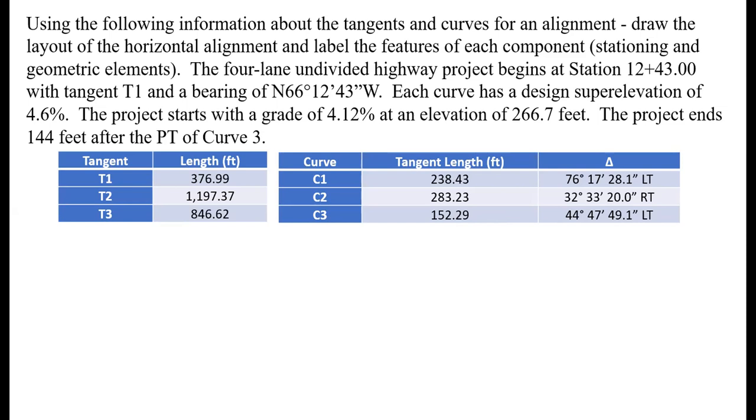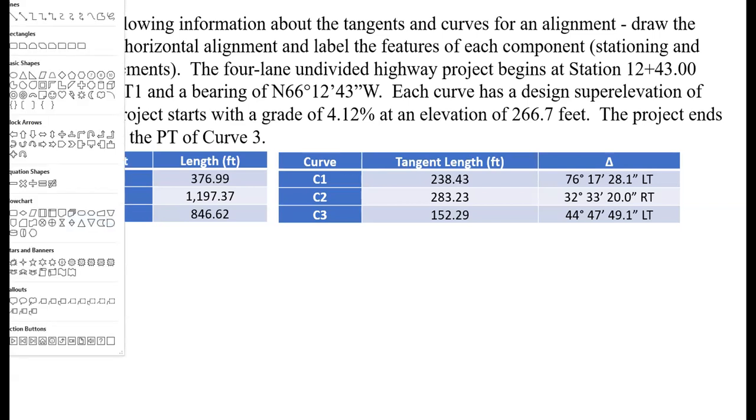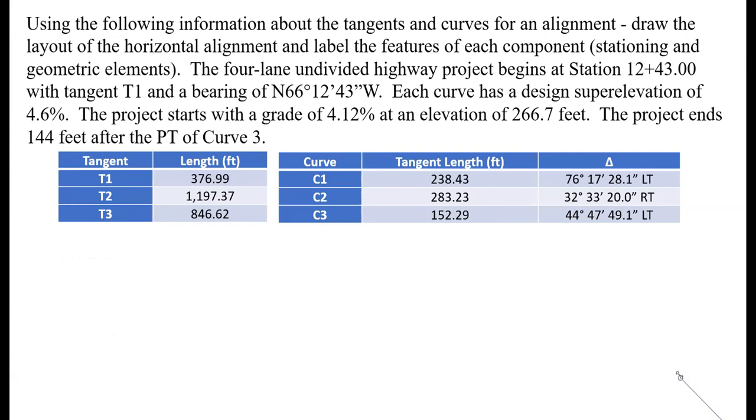There's probably some extra information here that we're not going to need. I'm going to start with a rough drawing of this alignment - we could tweak it and improve it, but this is just a rough sketch to make sure we understand the alignment. I'll start by adding our first tangent with a bearing of north 66 degrees west, so probably something like this. The lengths aren't going to be to scale - we're focusing on the angles in particular.